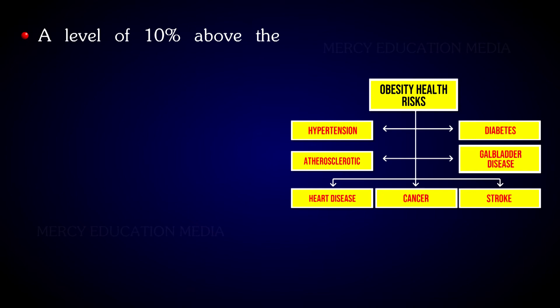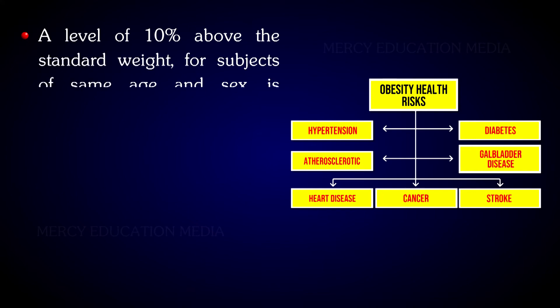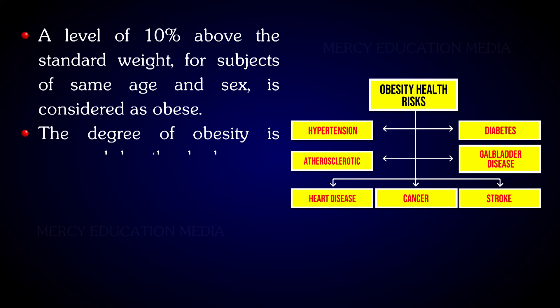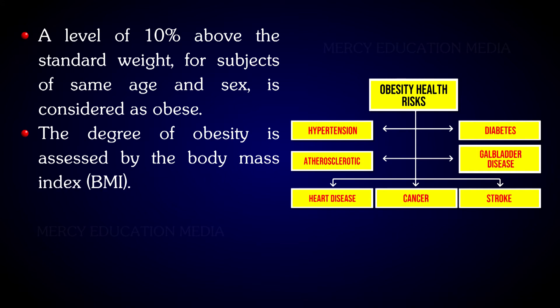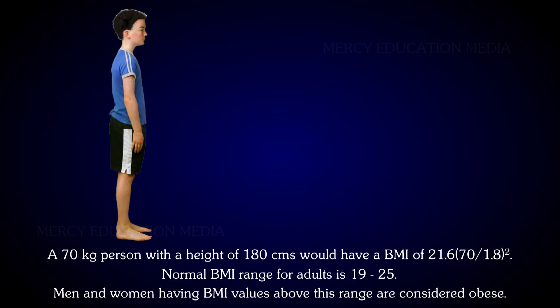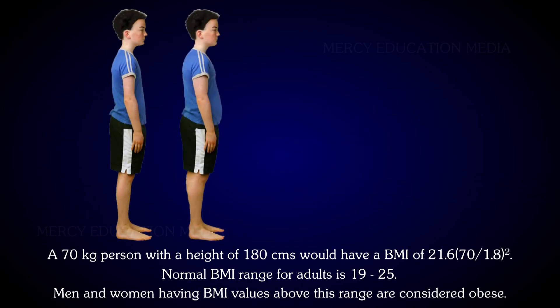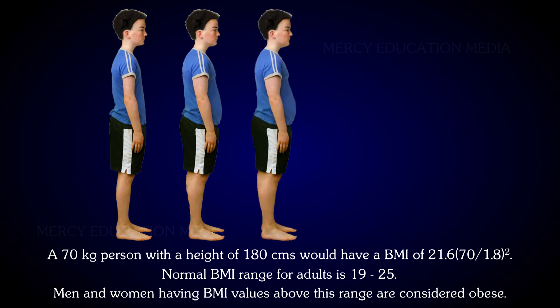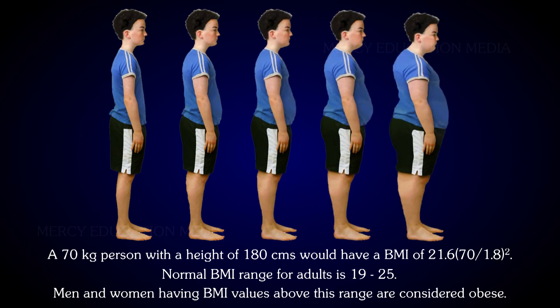A level of 10% above the standard weight for subjects of same age and sex is considered as obese. The degree of obesity is assessed by the body mass index (BMI). It is calculated as weight in kilogram divided by the square of height in meters. For example, a 70 kilogram person with a height of 180 cm would have a body mass index of 21.6.